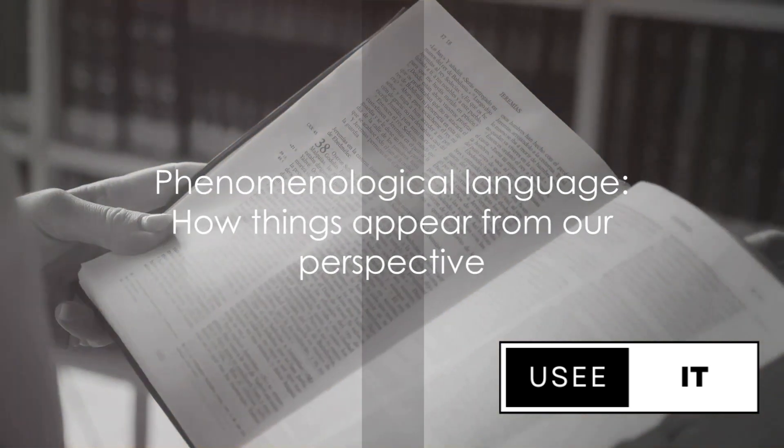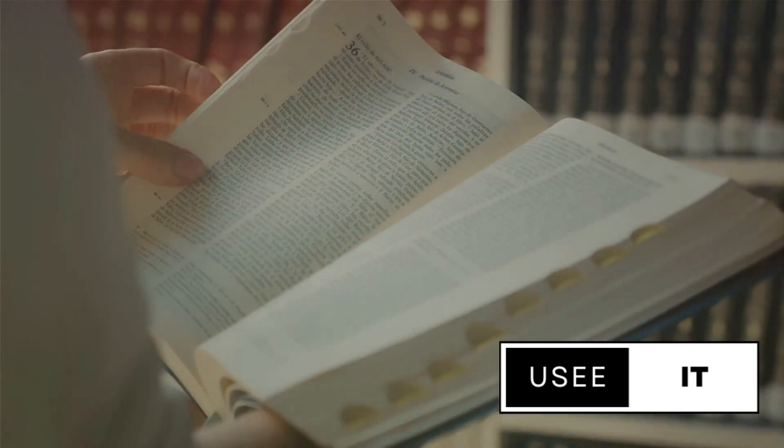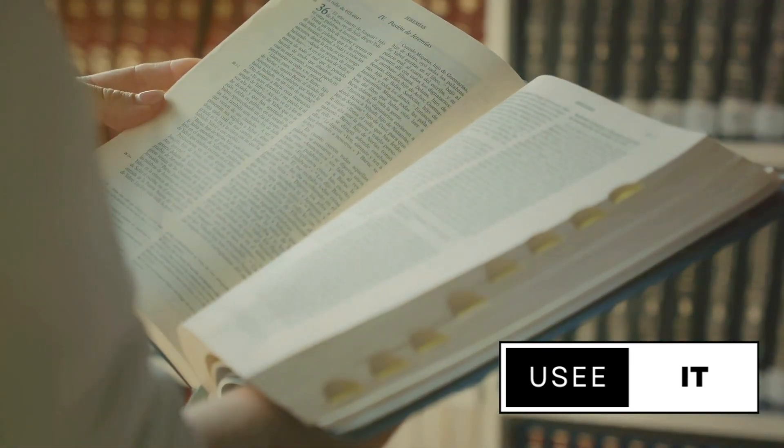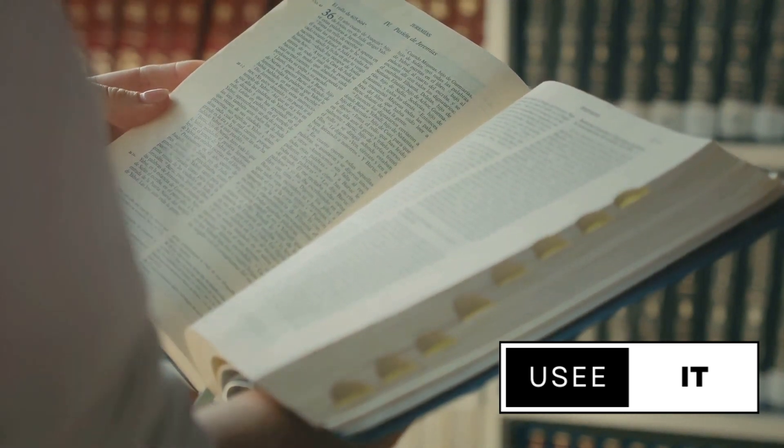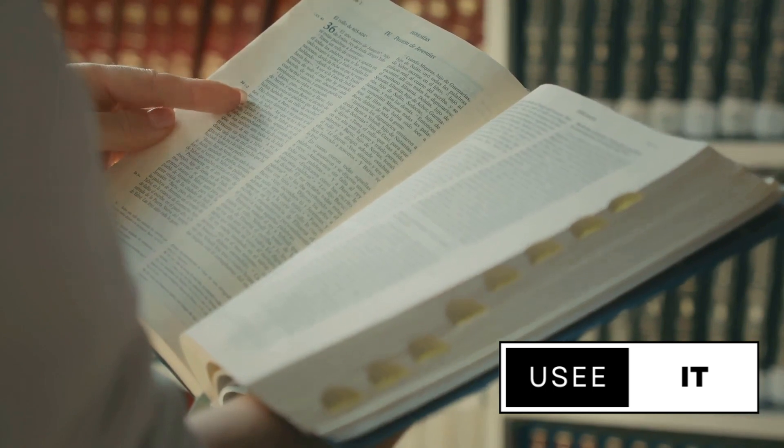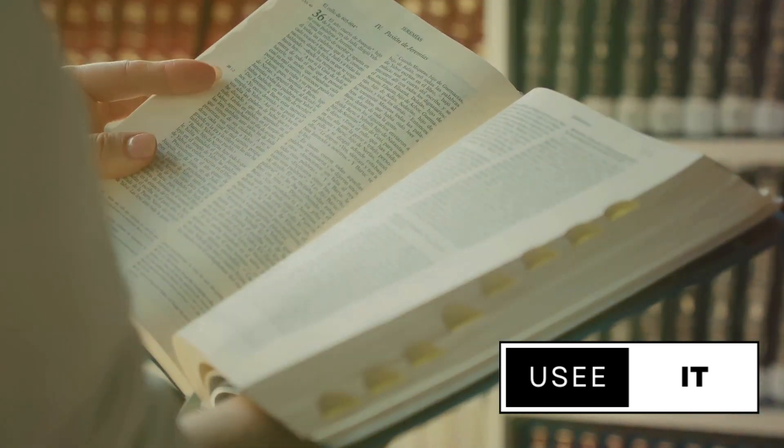Many theologians argue that the Bible uses phenomenological language, language that describes the way things appear from our human perspective. For example, when we say the sun rises, we don't mean that the sun is literally moving around the Earth. It's simply a way of describing our perception of the world.